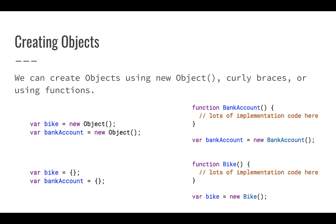So how do we actually build these? We can create objects using a couple of different ways in Apps Script or in JavaScript. The first way is to create a new object — we could create bike or bank account as a new object. We can also use curly braces, which is pretty common in JavaScript for objects we might just use once or throw away. This creates a new object with no properties and no methods. On the right side, we might use functions to create our objects, using the new keyword.